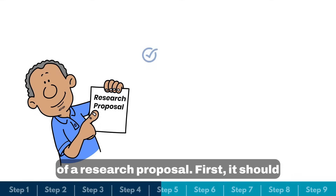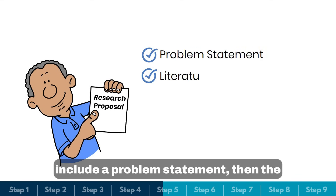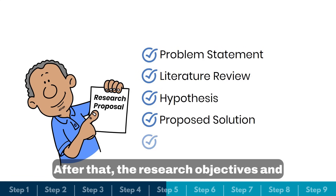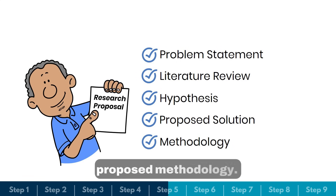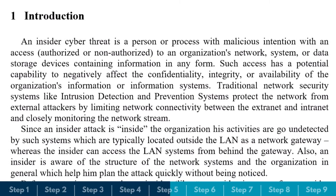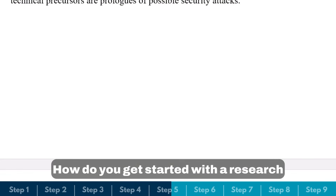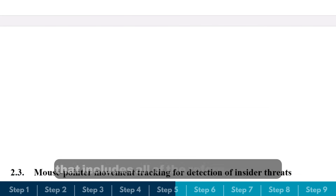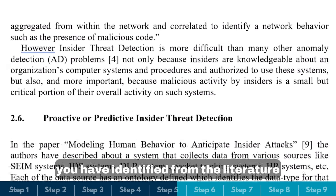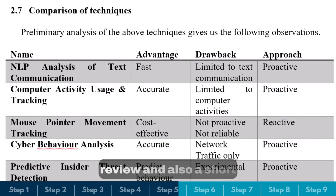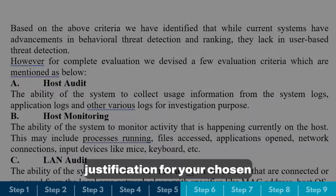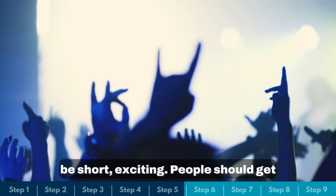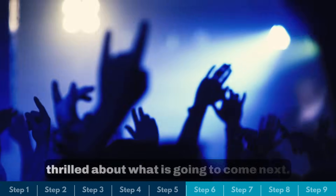The elements of a research proposal include: a problem statement, the literature review you have done, the research objectives and hypothesis, and finally the proposed methodology. To get started, draft a one-page research proposal that includes all the references identified from the literature review and a short justification for your chosen methodology. Think of it like a movie trailer of the research world — it should be short and exciting, making people eager to see what comes next.